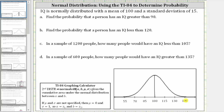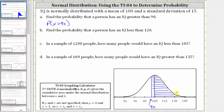For part A, we're asked to find the probability that a person has an IQ greater than 90, which we can indicate as P(x > 90). Looking at the graph, 90 is approximately here, and therefore the probability a person has an IQ greater than 90 is equal to the area under the curve to the right of the IQ score of 90 — this area here.